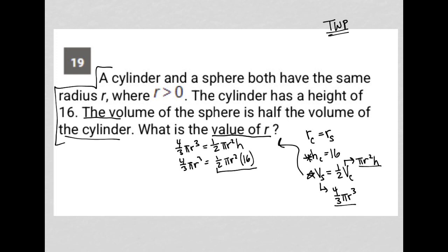What can I do? I'm going to first of all turn this into eight pi R squared, right? One-half times 16. So I have four-thirds pi R cubed equals eight pi R squared.